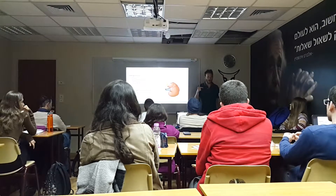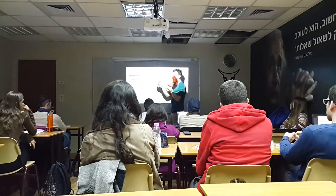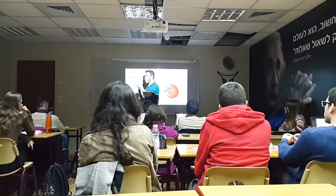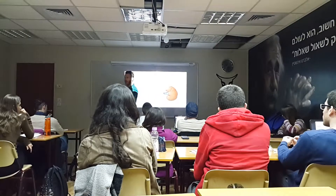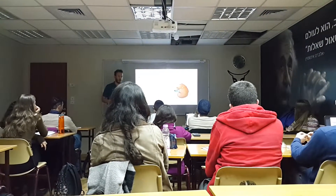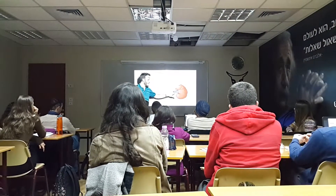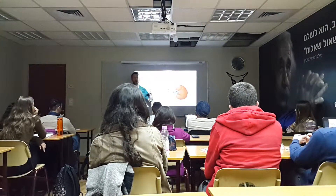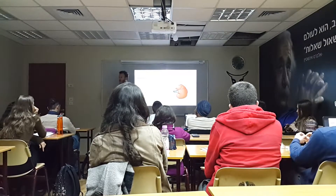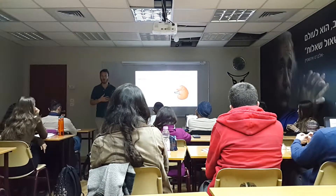You remember? The hilum of the lung is the place where all the vessels and bronchi go in and out of the lung. Same here — the hilum of the kidney is the area where different vessels go in and out of the kidney.